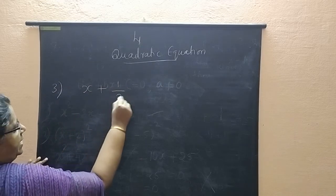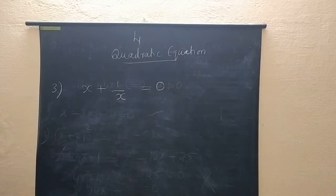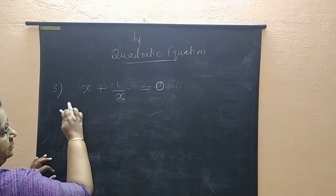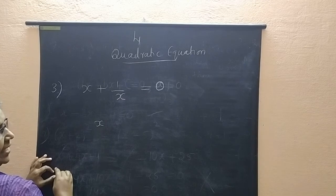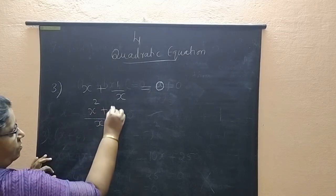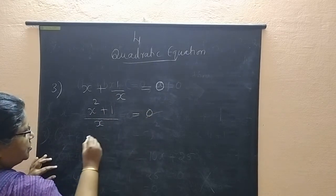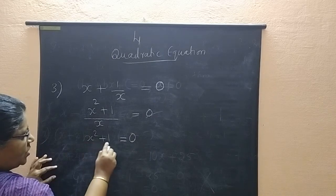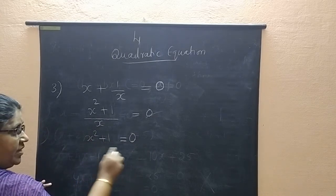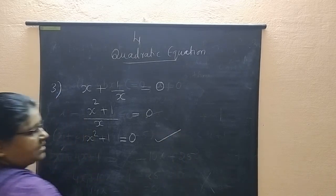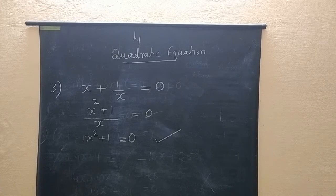Consider x + 1/x = 0. Is it a quadratic equation? We simplify by taking LCM as x, giving x² + 1 over x = 0. Cross-multiplying, x² + 1 = 0. This is an equation with degree 2, therefore it is a quadratic equation.